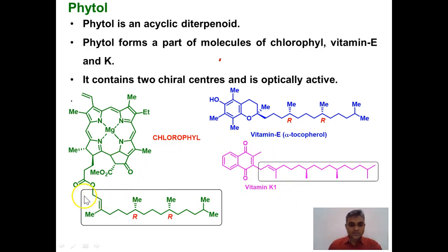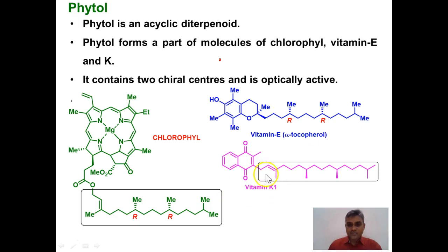In the chlorophyll molecule the phytol structure is highlighted here in the form of a box. Similarly in vitamin E we have 20 carbon atoms as a side chain, and in vitamin K1 this portion is again part of the phytol chain. The phytol molecule contains two chiral centers as shown here, and because of these two chiral centers it is an optically active compound.